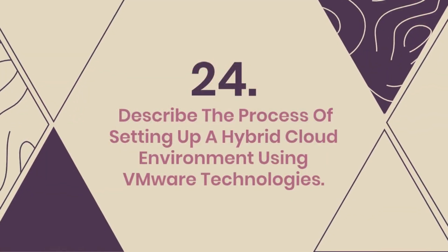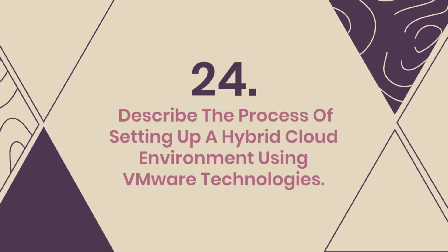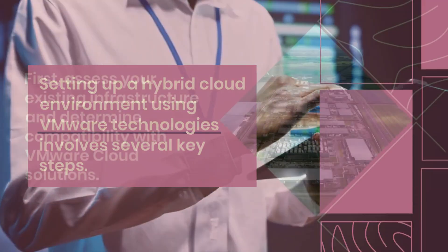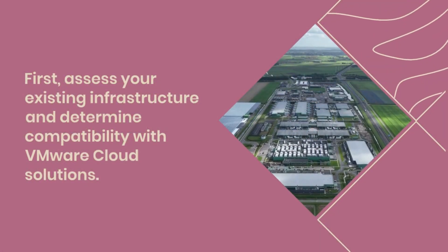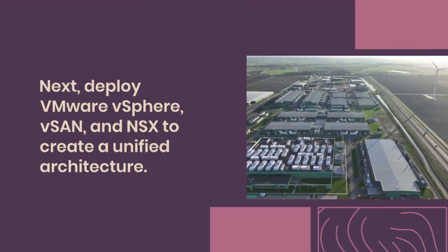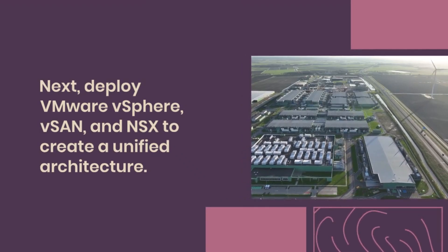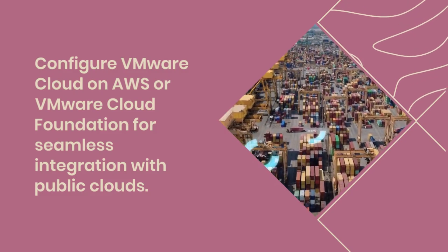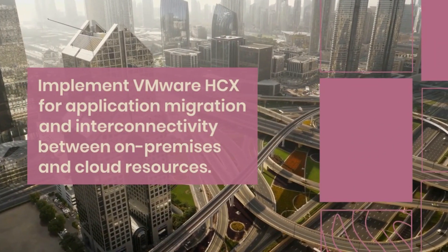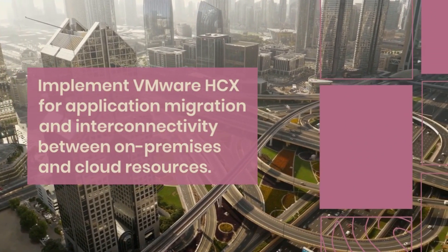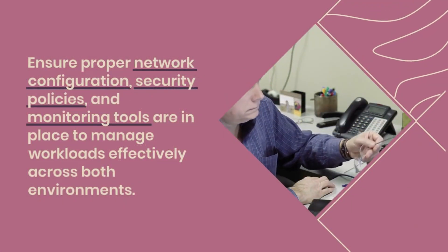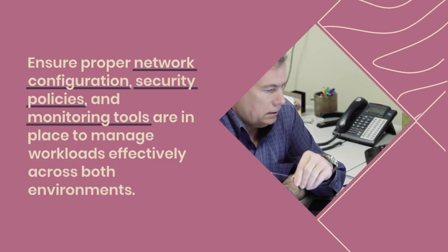Question 24: Describe the process of setting up a hybrid cloud environment using VMware technologies. Setting up a hybrid cloud environment using VMware technologies involves several key steps. First, assess your existing infrastructure and determine compatibility with VMware cloud solutions. Next, deploy VMware vSphere, vSAN, and NSX to create a unified architecture. Configure VMware Cloud on AWS or VMware Cloud Foundation for seamless integration with public clouds. Implement VMware HCX for application migration and interconnectivity between on-premises and cloud resources. Ensure proper network configuration, security policies, and monitoring tools are in place to manage workloads effectively across both environments.